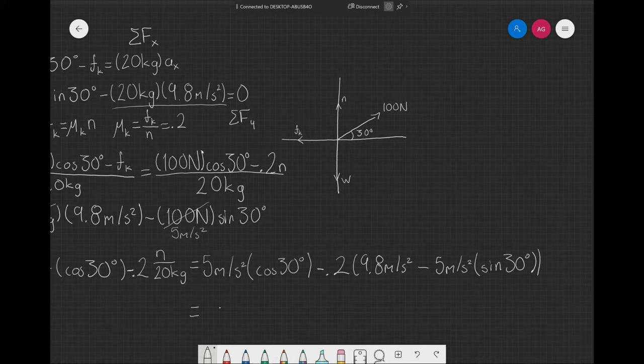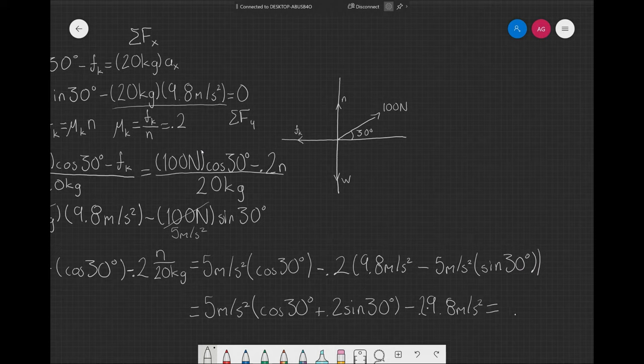And then, factor 5 meters per second squared. Cosine of 30 plus 0.2 sine of 30 minus 2 times 9.8 meters per second squared. And that will give you a total of 2.87 meters per second squared.